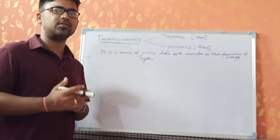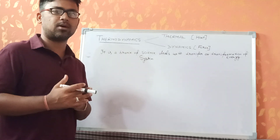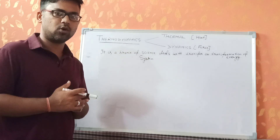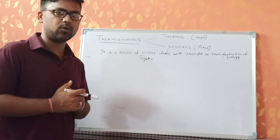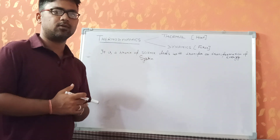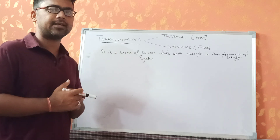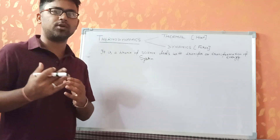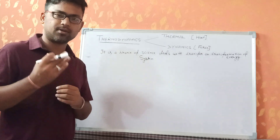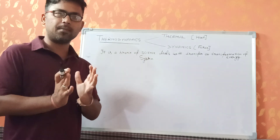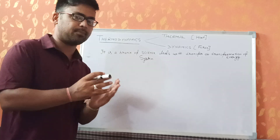Thermodynamics is a branch of science that deals with the transfer or transformation of energy during any physical process, and with the relationships among the different physical properties changing due to that process. In daily life, things around us are not random — they have directional constraints. For example, heat always transfers from higher temperature towards lower temperature.